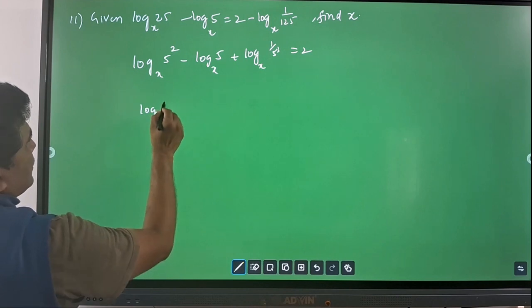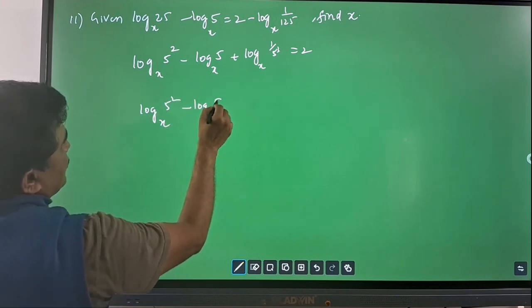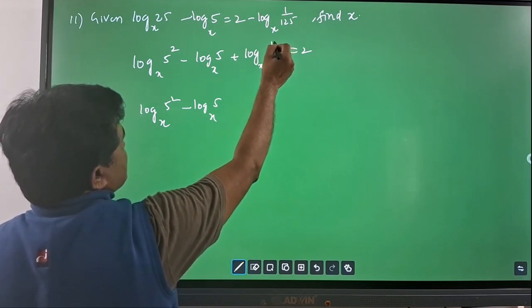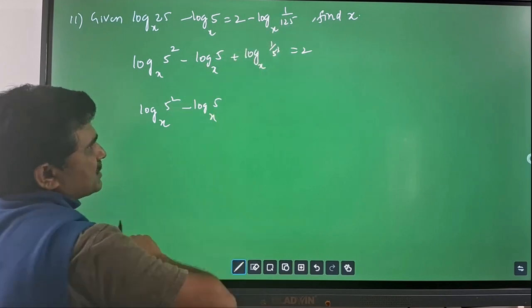So, log 5 squared with base x minus log 5 with base x. This can be written as 5 power minus 3. Because when this 5 power 3 goes to numerator, you have 5 power minus 3 there.